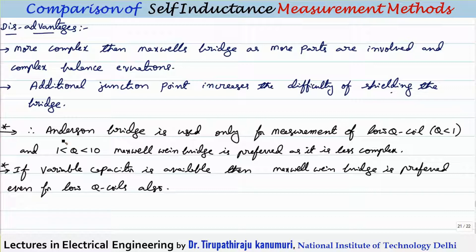The Anderson bridge is used only for low Q coils (Q < 1). For Q between 1 and 10, the Maxwell-Wien bridge is preferred; for Q > 10, the Hays bridge is used. Even for Q < 1, the Maxwell-Wien bridge is preferred if a variable capacitor can be used, because its equations are simpler and shielding is easier.